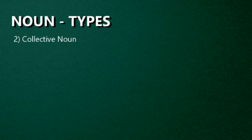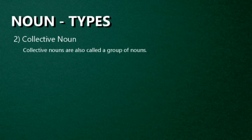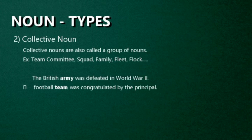Second one: Collective Noun. A name or noun used to denote a group of people, things, or animals is called a collective noun. Examples: team, committee, squad, family, fleet, flock. See some more examples: The British army was defeated in World War II — here, army is the collective noun because it does not refer to one person, it refers to a group of persons. Likewise, the second example: The football team was congratulated by the principal — here, team is the collective noun.